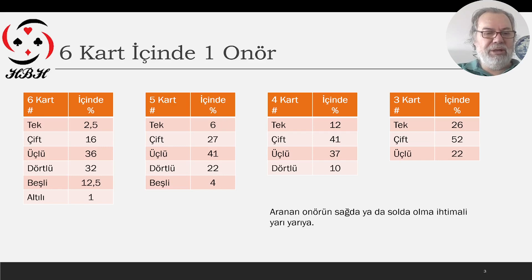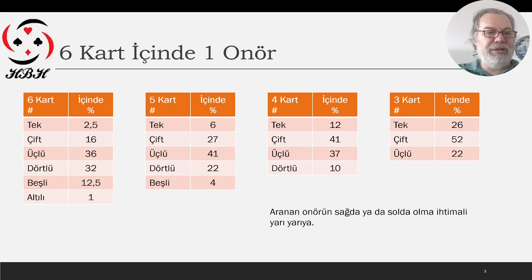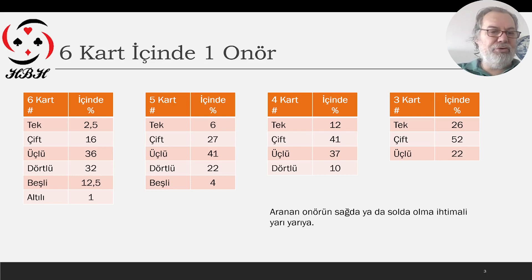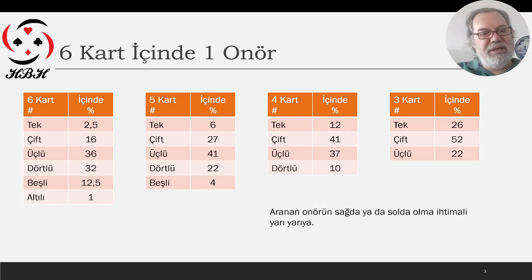Dikkatinizi çekmek isterim: mesela üçlü, sağda da olabilir, solda da olabilir. Zaten üç-üç dağılım olasılığı yüzde otuz altı. Dört-iki dağılım olasılığına bakın: çift olması on altı, dörtlü de olması otuz iki, yani ikisinin toplamı kırk sekiz. Tabii burada şunu unutmayalım: sağda mı arıyoruz, solda mı arıyoruz? Eğer üç parça olsun diyorsak yarısı kadar, yani on sekiz. Tek parça arıyorsan ve doğuda olsun diyorsan sadece yüzde bir yirmi beşe kadar iner.